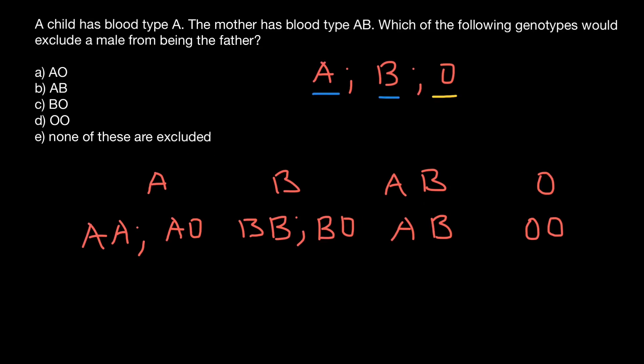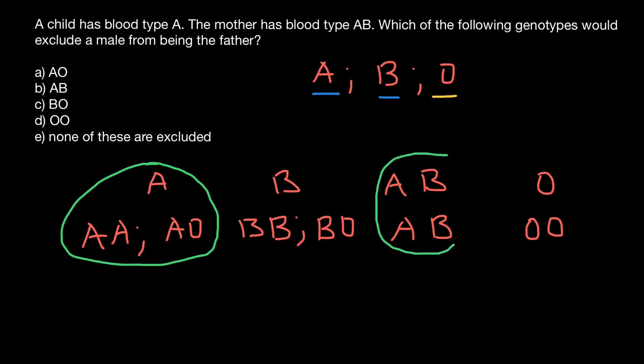Now let's return to our question and analyze what we see here. We know the child has blood type A, meaning he can be of two genotypes: AA or AO. And we know the mother belongs to blood group AB, which means she can only be of the genotype AB.